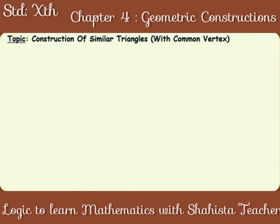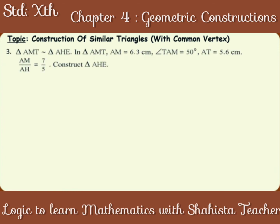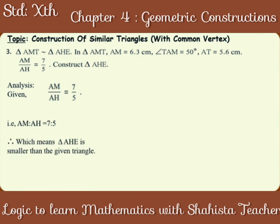Question number 3. Triangle AMT is similar to triangle AHE. In triangle AMT, AM is equal to 6.3 cm, angle TAM is equal to 50 degrees, AT is equal to 5.6 cm. AM upon AH is equal to 7 upon 5. Construct triangle AHE. Analysis: given AM upon AH is equal to 7 upon 5, that is AM is to AH is equal to 7 is to 5, which means triangle AHE is smaller than the given triangle. And A is a common vertex of both the triangles.